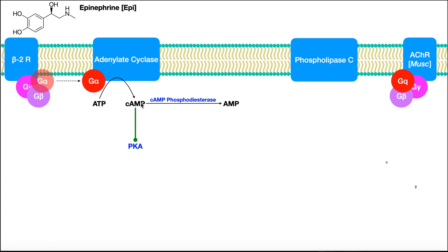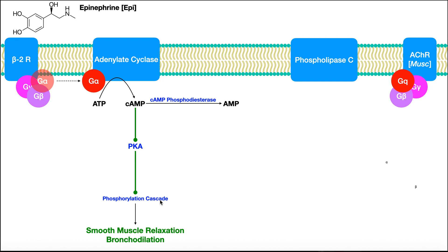When adenylate cyclase becomes activated by G-alpha, it converts ATP into cyclic AMP, a second messenger. Cyclic AMP normally is going to activate this enzyme called protein kinase A, and then protein kinase A will trigger a phosphorylation cascade. In the case of the pulmonary system, this cascade leads to two things: one is smooth muscle relaxation, which directly leads to bronchodilation — the opening of the airways.